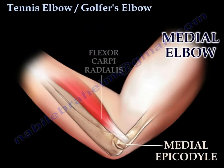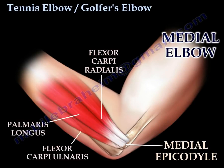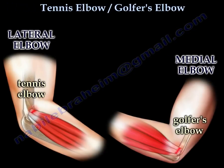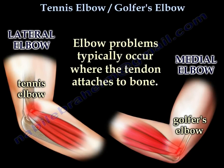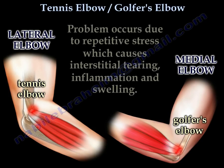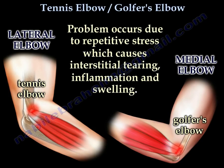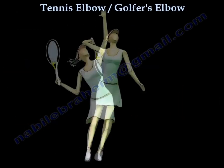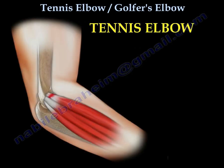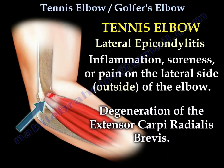On the medial side of the elbow, the medial epicondyle gives origin to the flexor muscle group. Elbow problems occur with the tendon attached to the bone at the outer side — the lateral elbow, which we call tennis elbow — or at the medial side, which we call golfer's elbow. The problem occurs due to repetitive stress, which causes interstitial tearing, inflammation, and swelling of the tendon.